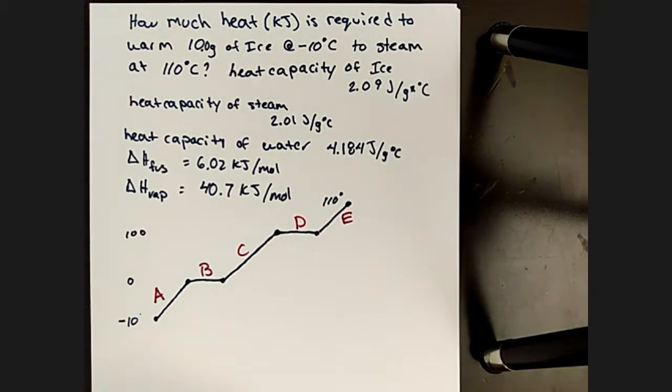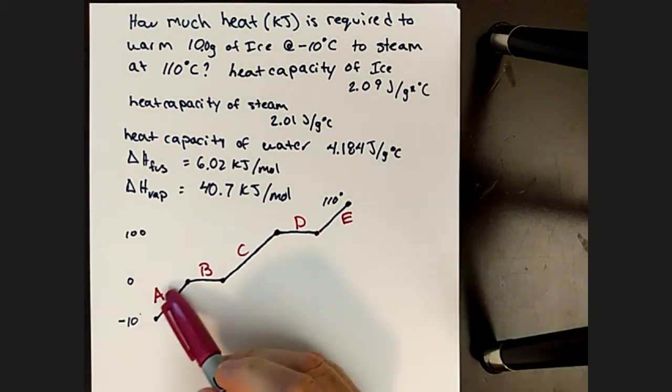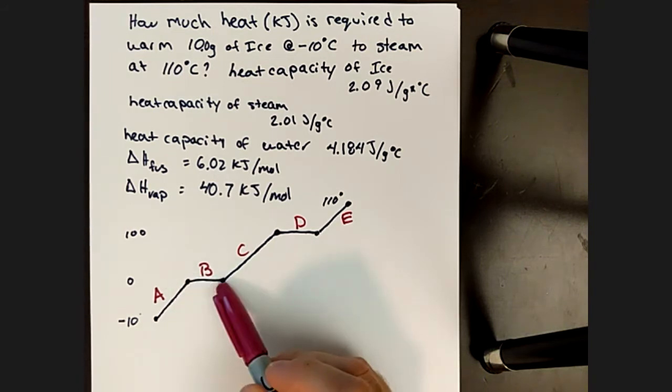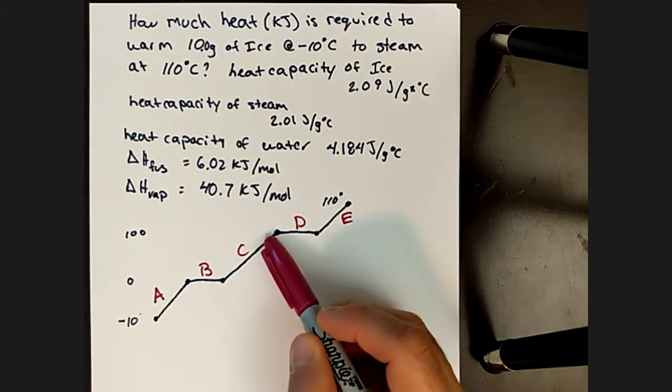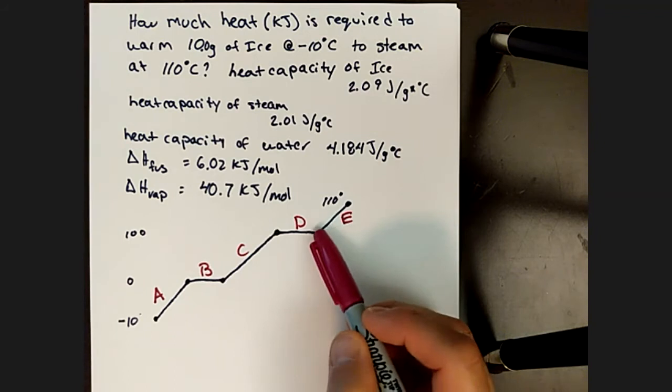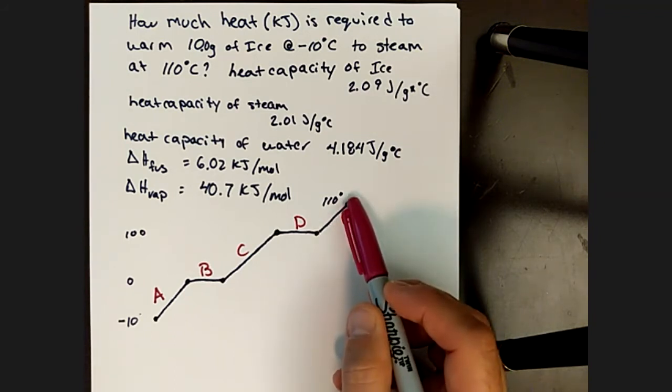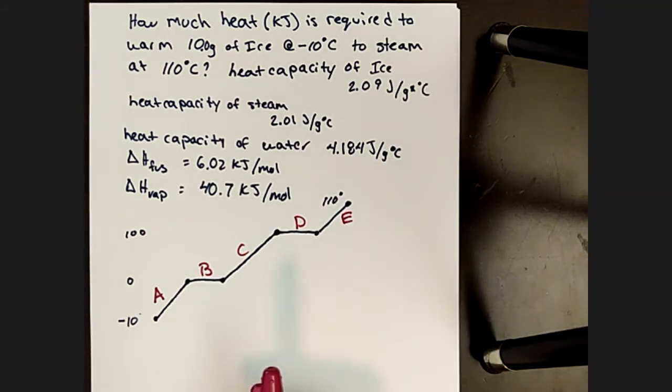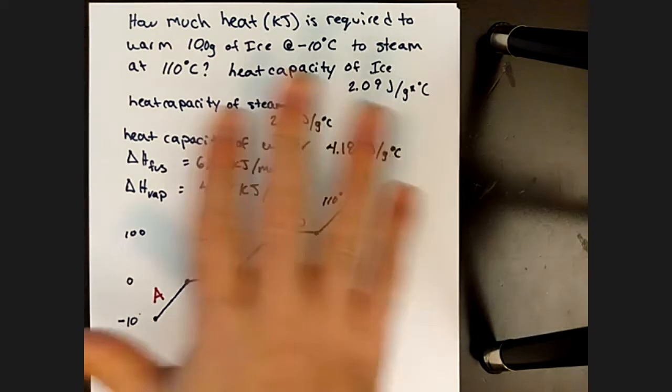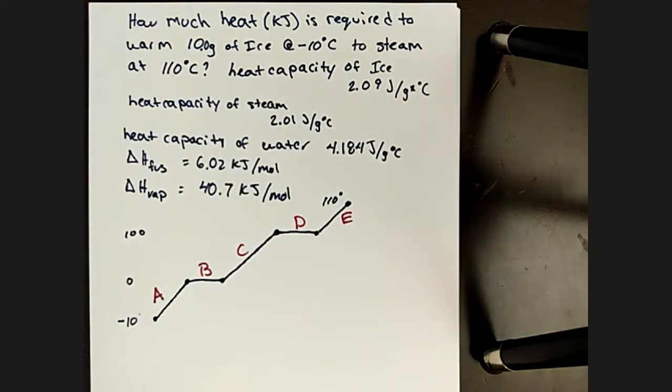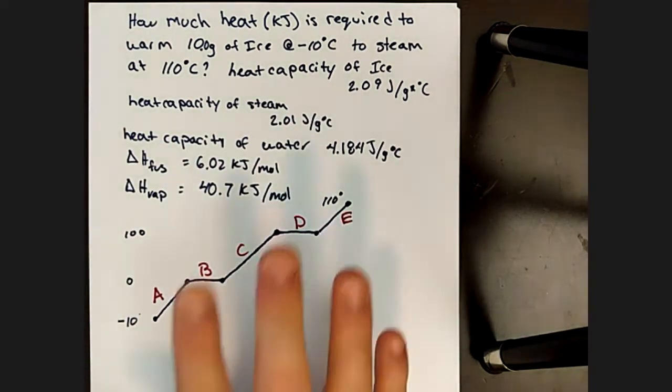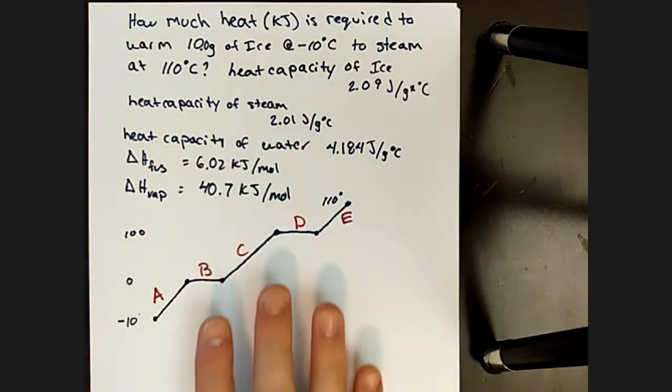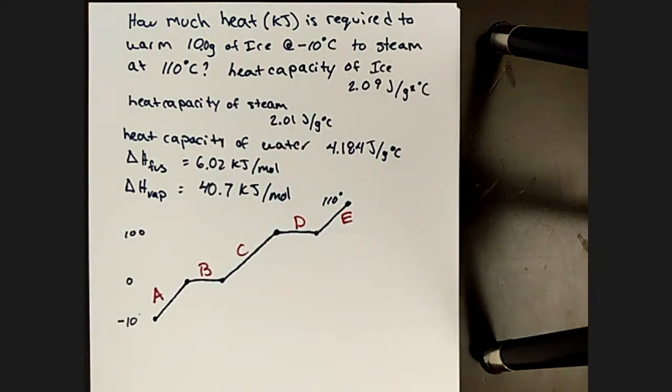We're going to take it beginning to end, and so the way I like to do this here is to break this into segments. So here we have segment A, the heating segment, B phase change, segment C heating, segment D phase change, segment E heating. Each segment is going to have a slightly different bit of information. I may lose the question here as I flip to another page, but I'll try and bring this back up to reference which step we're on as we go through this.